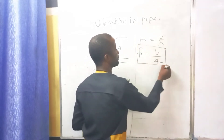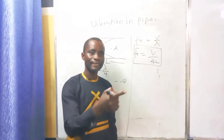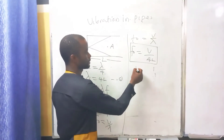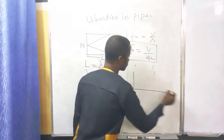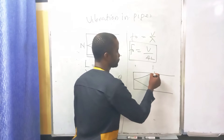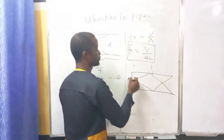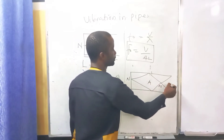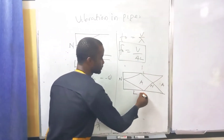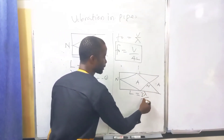This is the fundamental frequency of a closed pipe. Now let's generate the first overtone. As soon as we introduce another air column into the vibration, we have anti-node, node, anti-node, node, and anti-node. Now, the length L equals — counting the segments: 1, 2, 3 — that would be 3 lambda over 4.